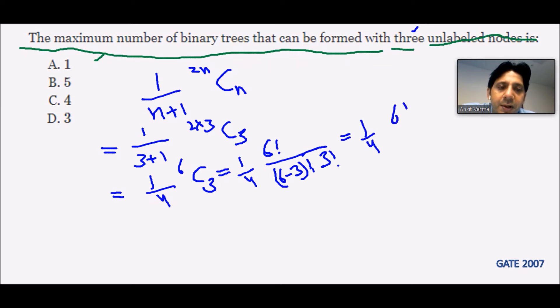It will be 1/4. Now we are expanding the 6 factorial up till the 3 factorial, which is 6*5*4*3!/3!. Then we are again expanding the 3 factorial: 3*2*1.